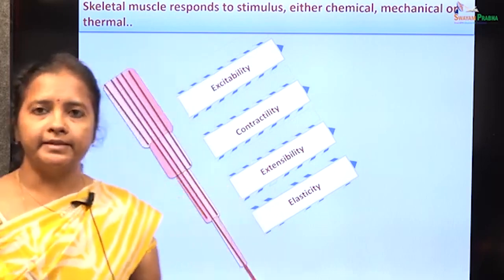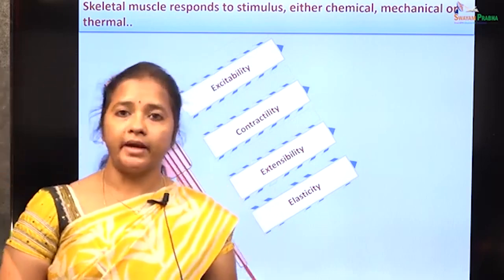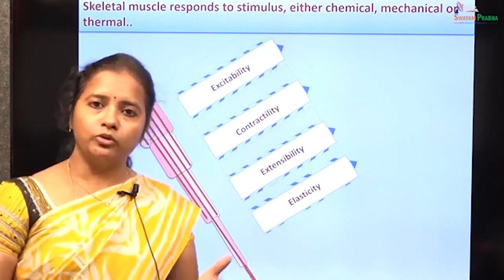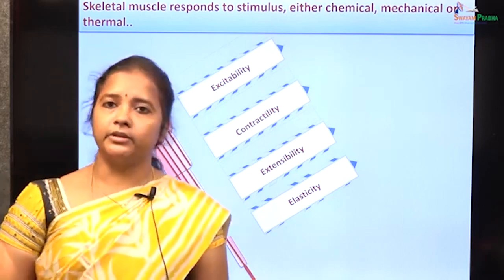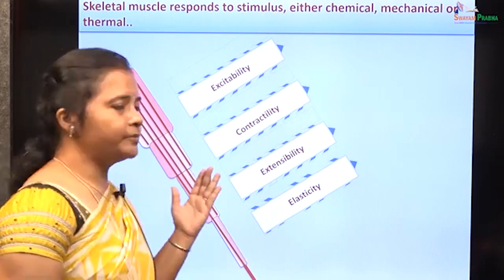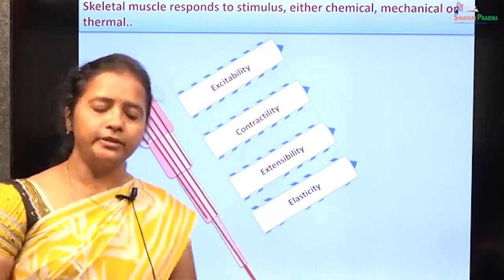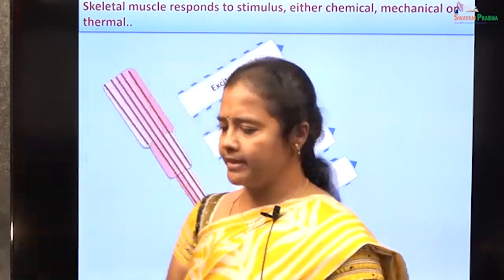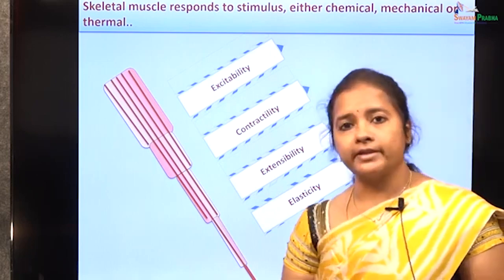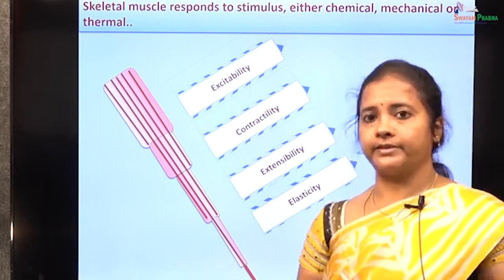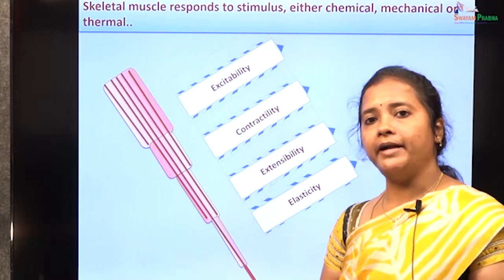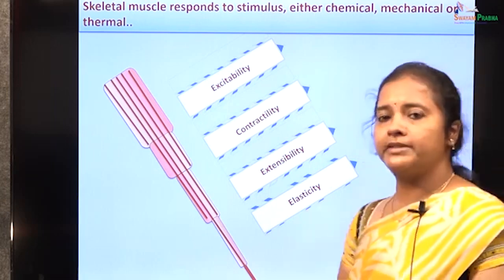Excitability implies that skeletal muscles can generate their own action potential. The skeletal muscles are stimulated by neurons through the neuromuscular junction — the release of neurotransmitters acts on the skeletal muscle membrane to generate its own action potential. This action potential makes the skeletal muscle fiber contract by means of actin-myosin interaction and development of a power stroke.